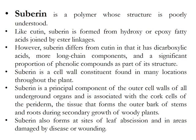Suberin is a polymer whose structure is poorly understood. Like cutin, suberin is formed from hydroxy or epoxy fatty acids joined by ester linkages. However, suberin differs from cutin in that it has dicarboxylic acids, more long-chain components, and a significant proportion of phenolic compounds. Suberin is a cell wall constituent found throughout the plant; it is a principal component of outer cell walls of all underground organs and is associated with cork cells of the periderm — the outer bark of stems and roots during secondary growth. Suberin also forms at sites of leaf abscission and in areas damaged by disease.